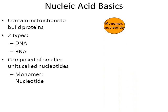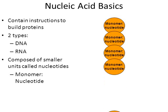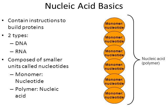Nucleic acids are organic molecules made from smaller organic molecules. A monomer is a small part of an organic molecule. The monomer of a nucleic acid is called a nucleotide. When one nucleotide bonds with another and another, it makes a larger object called a nucleic acid. So monomers bond to make polymers — in nucleic acids, the monomer is a nucleotide and the polymer is a nucleic acid.